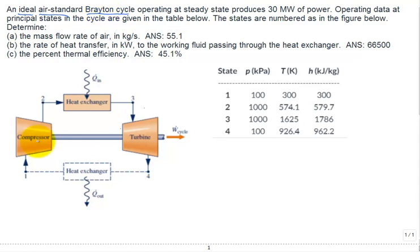It's a Brayton cycle, meaning we have a compressor, a burner (it's a heat exchanger), a turbine, and then to close the cycle, we introduce another heat exchanger, which is for heat rejection.